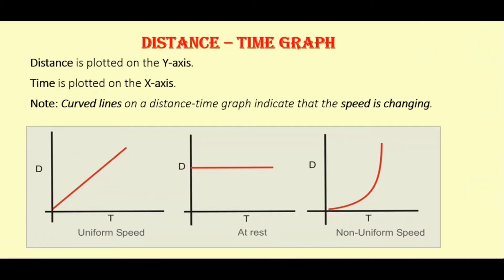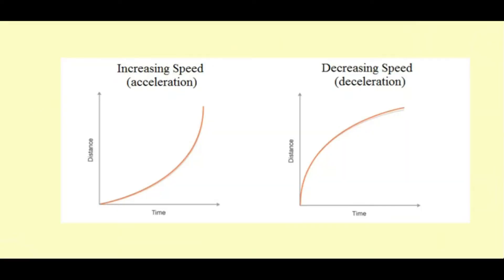A curved graph means it is non-uniform motion — the object is covering unequal distances in unequal intervals of time. To summarize: a straight line means uniform motion, a line parallel to the x-axis means the object is at rest, and a curved line means non-uniform motion.